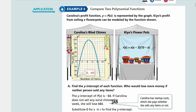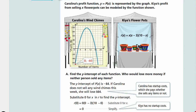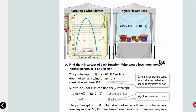Who would lose more money if neither person sold any items? For Kia's flower pots, plugging in zero for x gives zero times negative three times ten, which equals zero. So Kia has no starter costs — she didn't have to pay anything. Carolina had to pay for her materials and make the wind chimes, so if she doesn't sell anything she loses 64 dollars. If Kia doesn't sell anything, she doesn't lose any money. The y-intercept represents how much money you initially spent before selling.